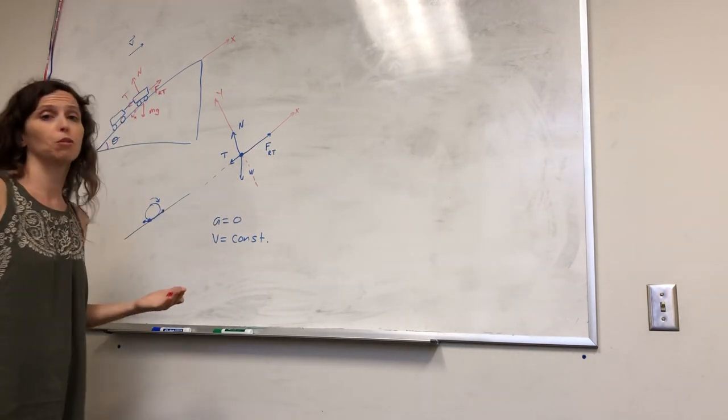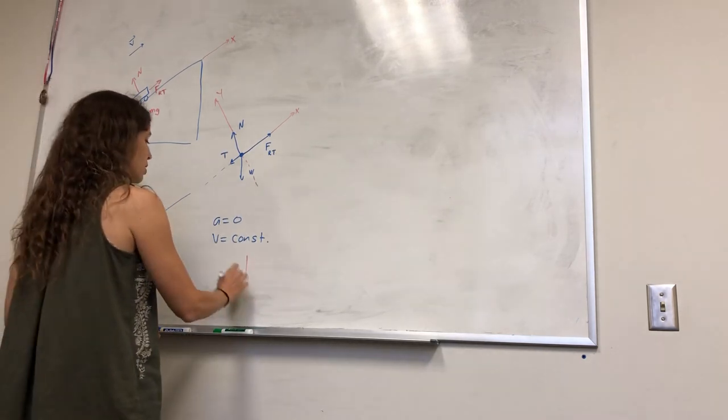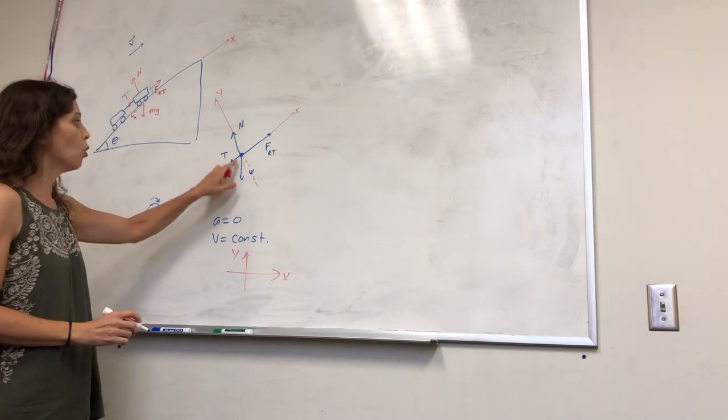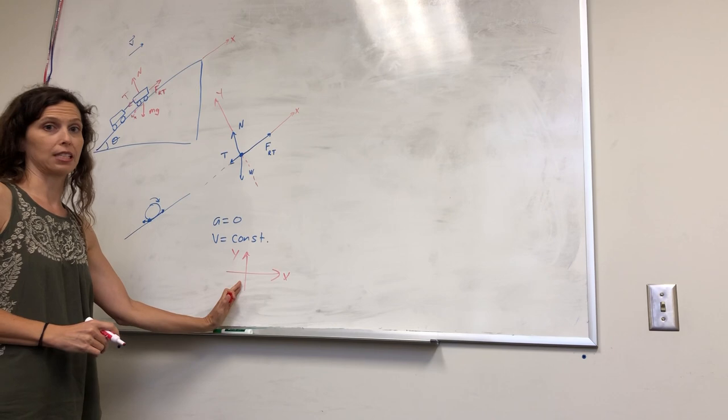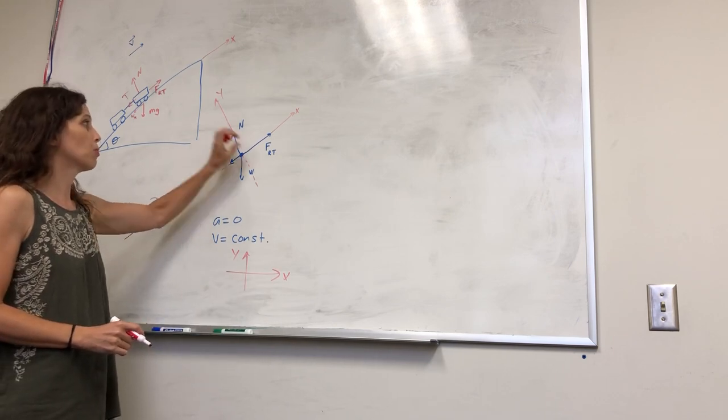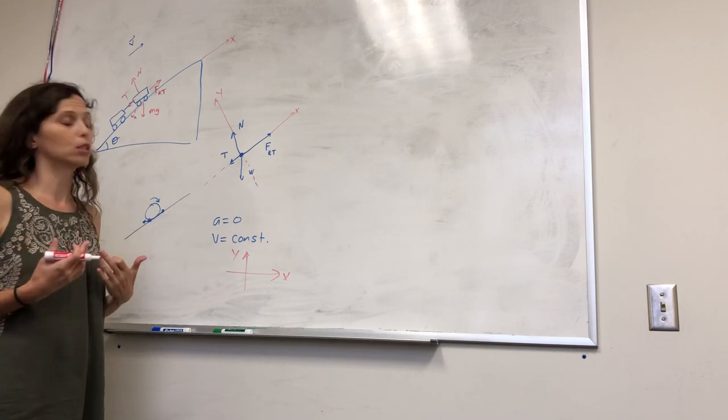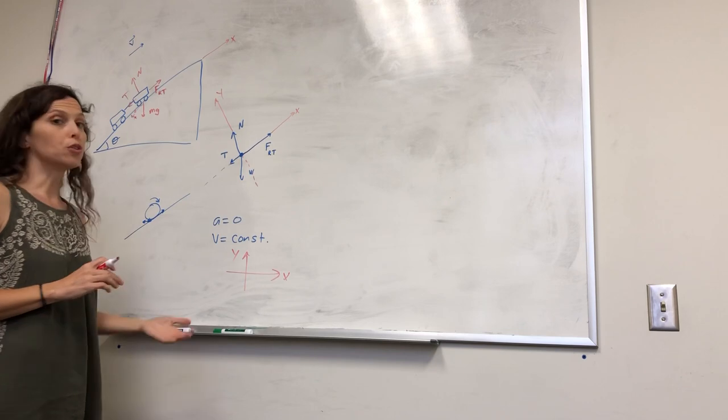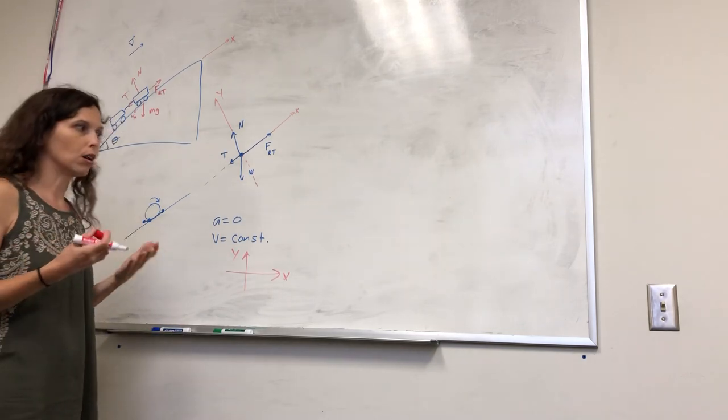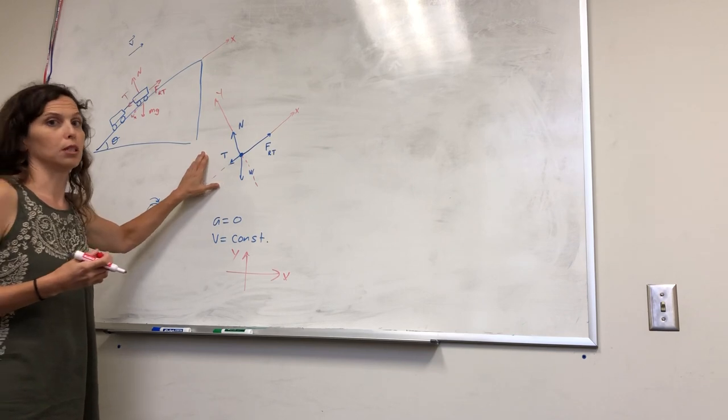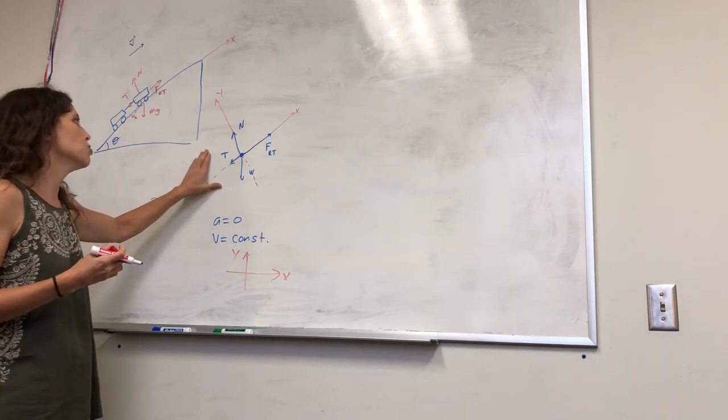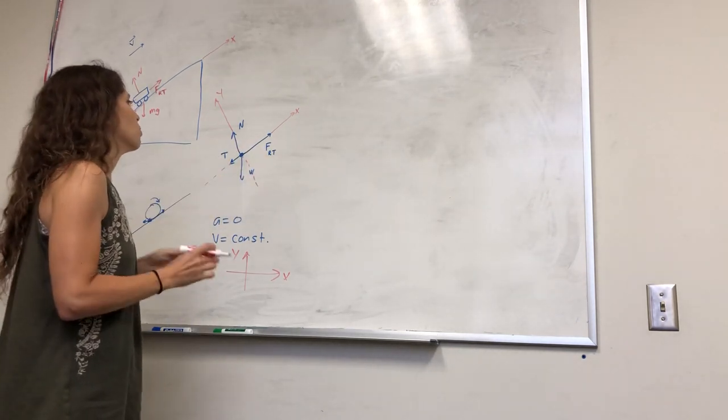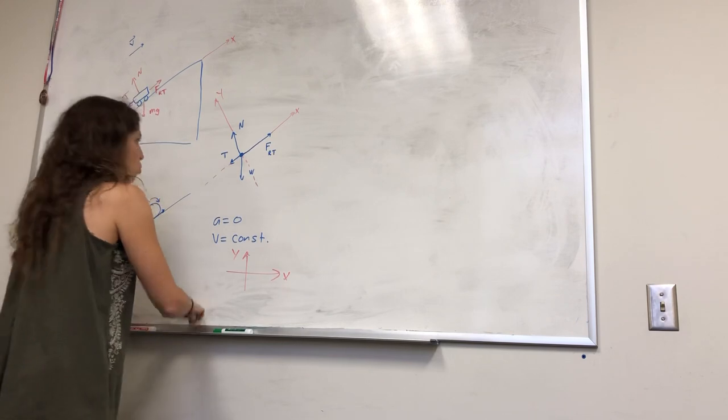Now, I could have perfectly well chosen to use a traditionally-oriented coordinate system, but if I had done that, then only the weight force would line up with either of these axes, and then I would need to resolve the normal force, this force, and the tension force all into components in order to analyze the situation. You can do that. There's nothing wrong about doing that. This will just make your life a little bit easier. So, once you have your coordinate system defined and you see the forces, how they're aligned to it, then you can start summing the forces in each direction.